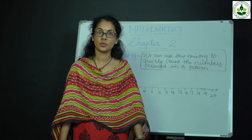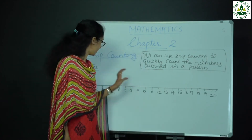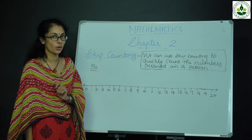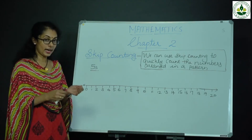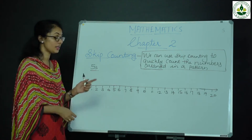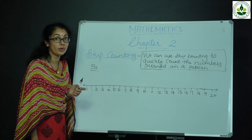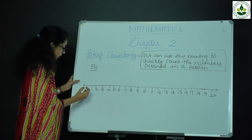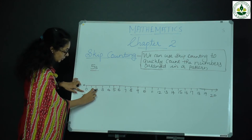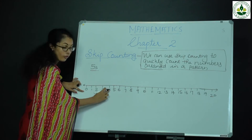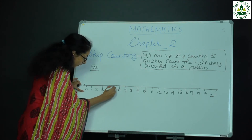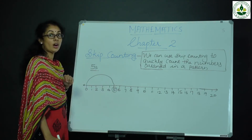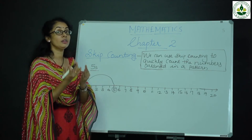Next one is skip counting of 5. First you start from number 0. This is skip counting of 5, so I count how many times? 5 times. Starts from 0: 1, 2, 3, 4, 5 — so 0 to 5.